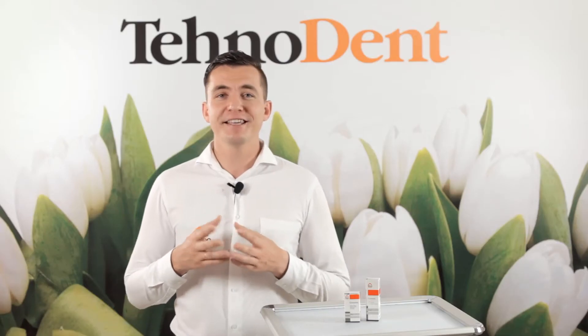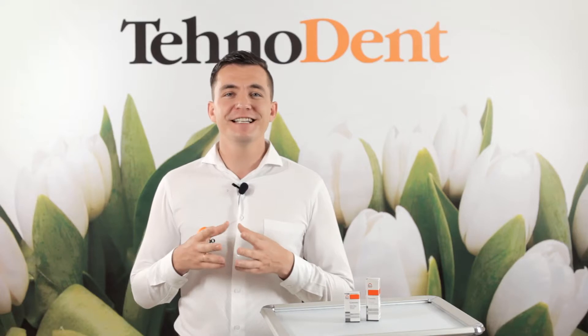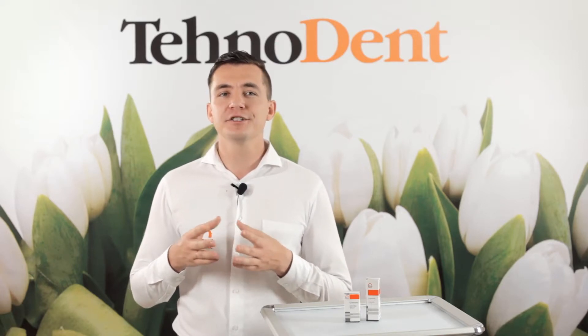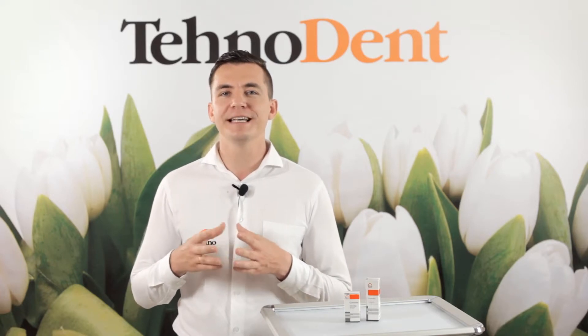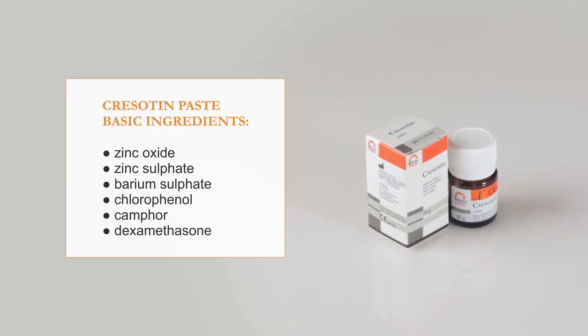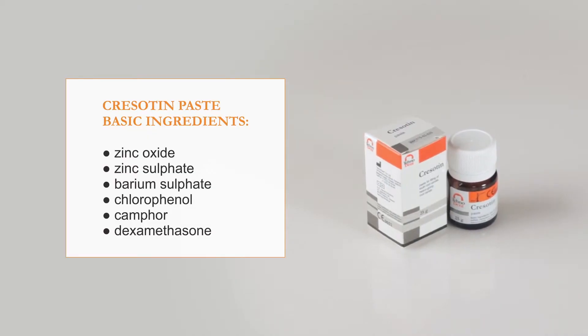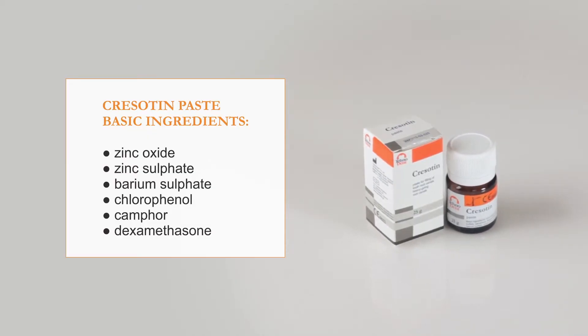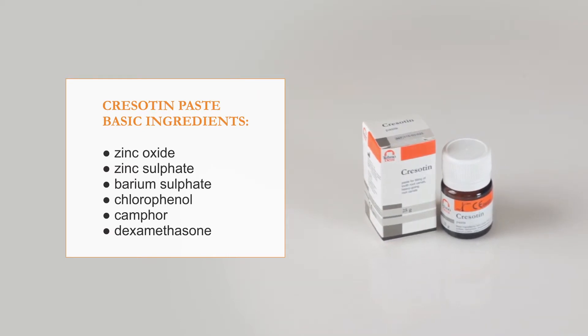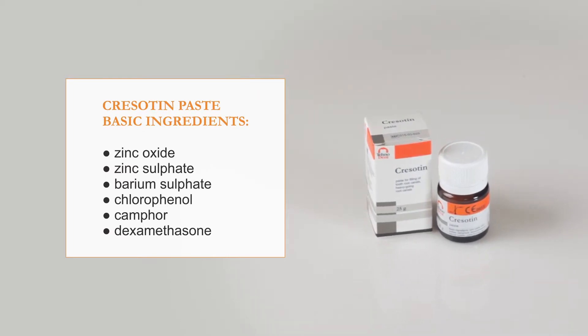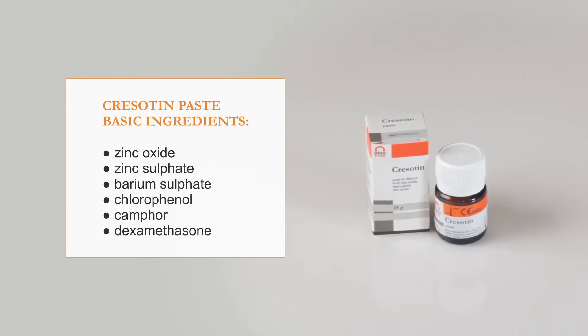Cresatine Paste is used for sealing of infected and impenetrable canals and also for sealing of canals with incomplete pulp extirpation. This material contains zinc oxide and zinc sulfate, antiseptics having astringent properties. Barium sulfate is a radiopaque filler in the paste.